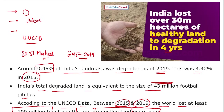This amounts to around 9.45% of India's landmass degraded as of 2019, compared to 4.42% in 2015. India's total degraded land is equivalent to the size of 43 million football pitches. According to UNCCD data, between 2015 and 2019, the world lost at least 100 million hectares of healthy and productive land every year. The National Mission for a Green India — one of eight missions under the National Action Plan — aims to protect, restore, and enhance forest cover and respond to climate change.